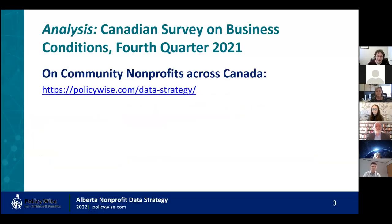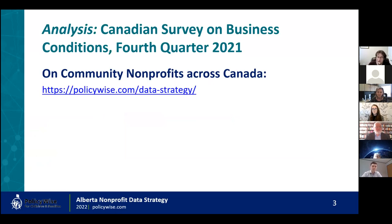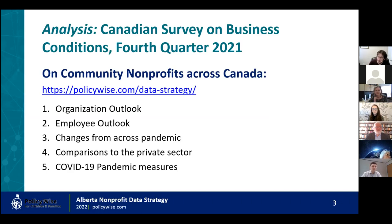Before getting into things, here is a teaser: as part of the data strategy, PolicyWise produces updated analyses related to topics relevant to the nonprofit sector to support planning. An analysis that just came out last week uses Statistics Canada data from the Canadian Survey on Business Conditions in the fourth quarter, and it tells the story of community nonprofits across Canada in terms of their organizational outlook — income, employees, and what has been seen across the pandemic, including two years of comparisons to other sectors and COVID-19 measures. Visit the PolicyWise website to see this and other analyses.